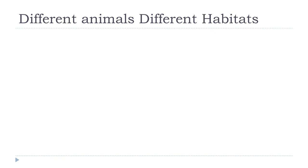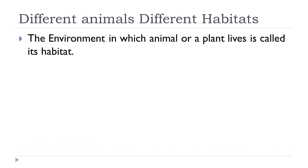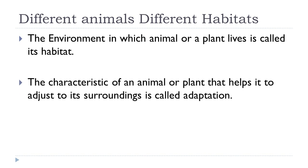Different animals have different habitats. The environment in which an animal or a plant lives is called its habitat. All animals and plants have the body structure and habits essential to survive in their habitat. The characteristic of an animal or plant that helps it to adjust to its surroundings is called adaptation. Different adaptations are needed for different functions.